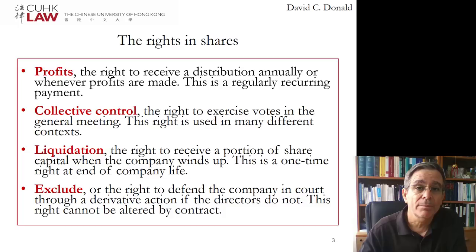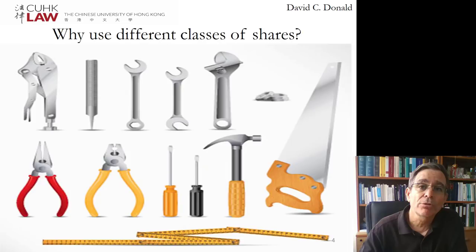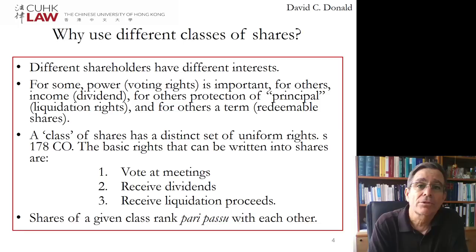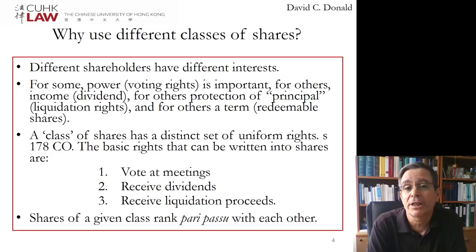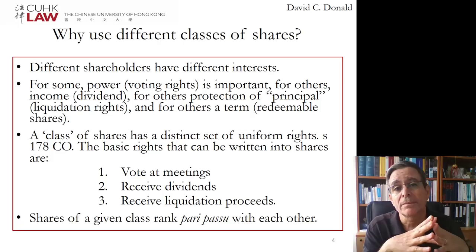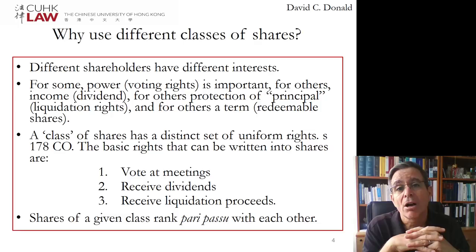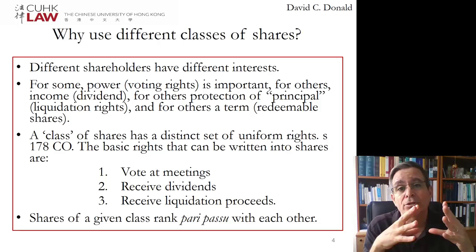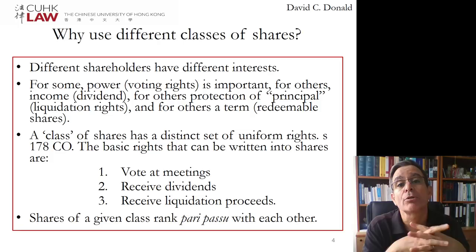Why do we use different classes of shares? Basically, the rights are tools to structure cash flow and control rights in different arrangements to meet different needs. Some members want control of the company; others have no time for that and are interested in a return of regular dividends. All members would like information and the ability to sue if their rights are being abused. Those last two rights — information and the right to exclude — are not generally negotiable in classes of shares. However, the right to vote at meetings, the right to receive dividends, and the right to receive liquidation proceeds are the primary focus of structuring classes of shares.